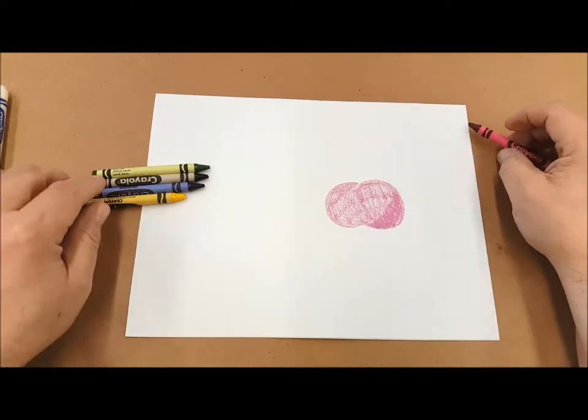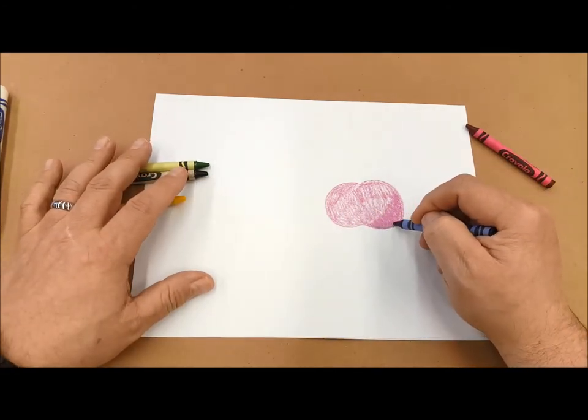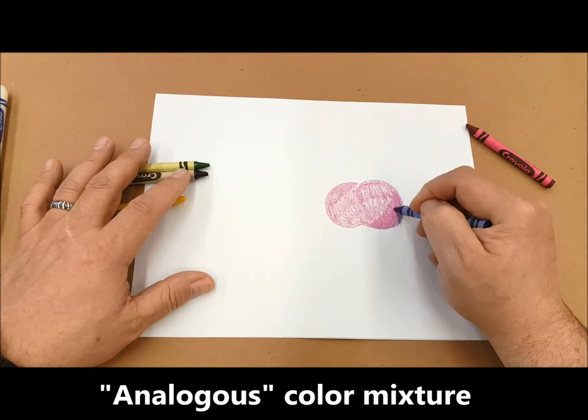But I could also blend in another color, maybe a blue and overlap it and that will also make it look darker on that side as well.